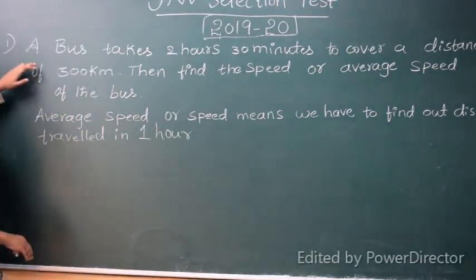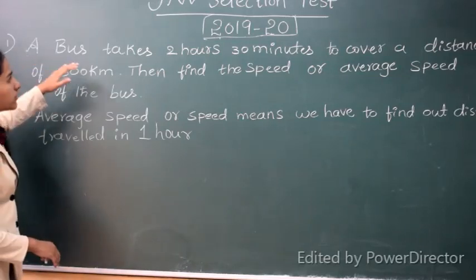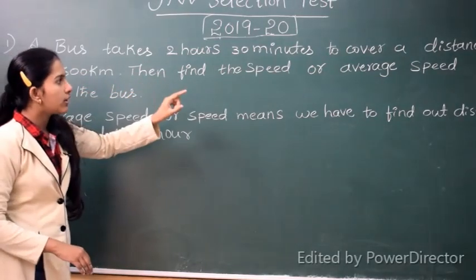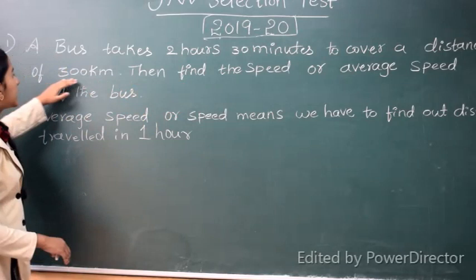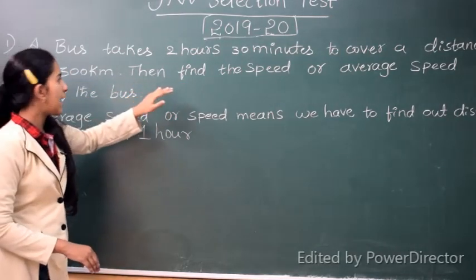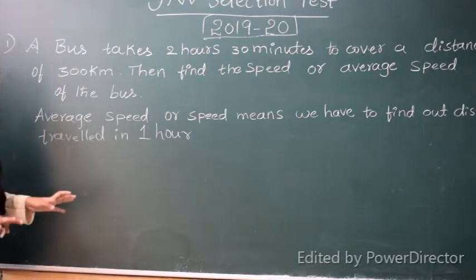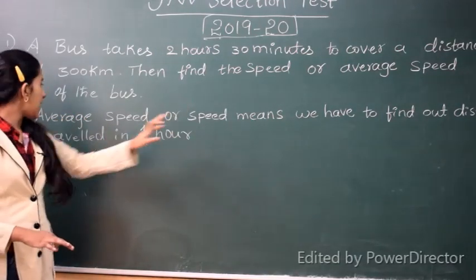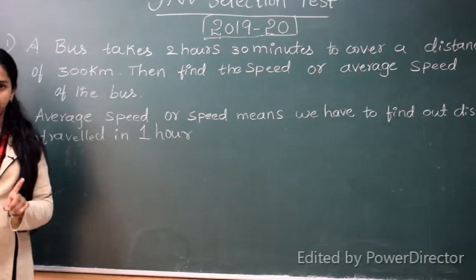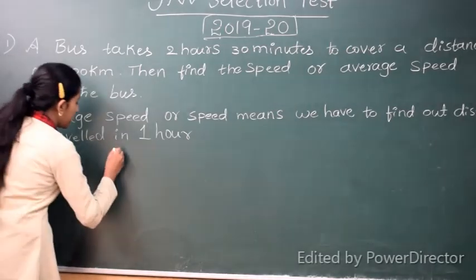So in speed the question is like this: a bus takes 2 hours 30 minutes to cover a distance of 300 km. Then find the speed or average speed of the bus. Average speed is nothing but the distance travelled by the bus in 1 hour. So step 1 is convert time into hours.